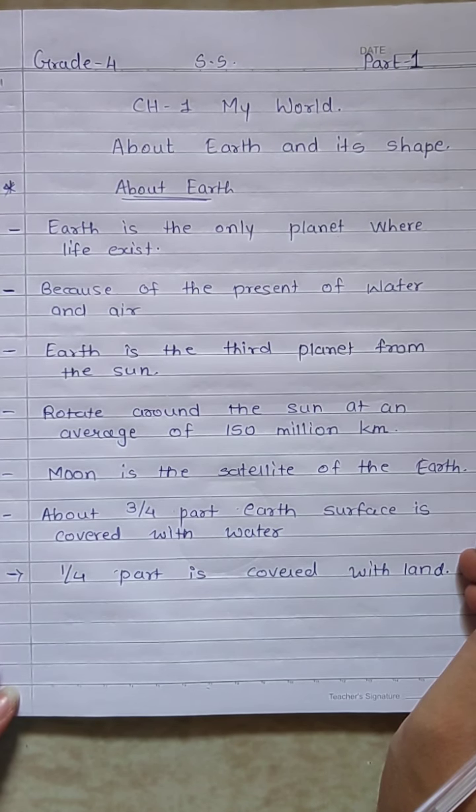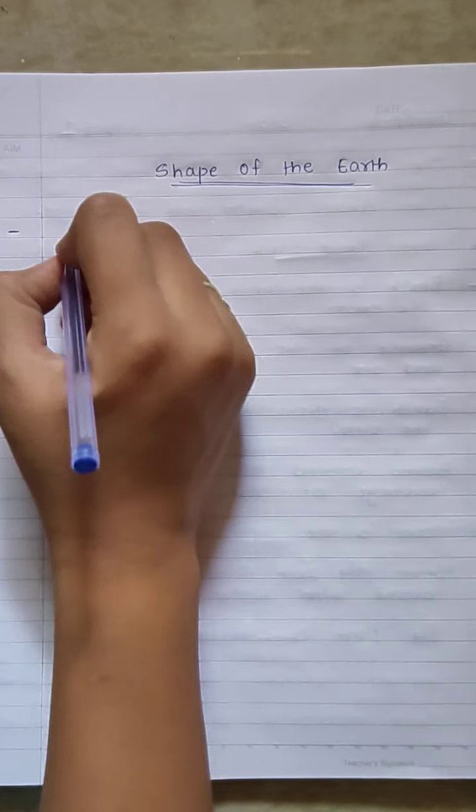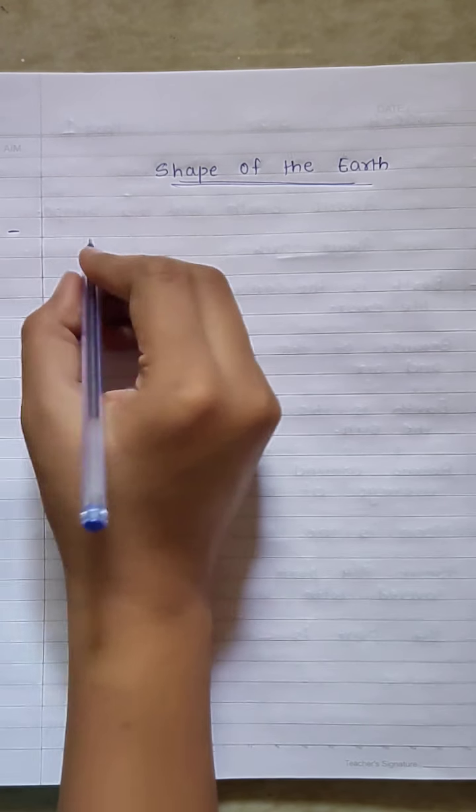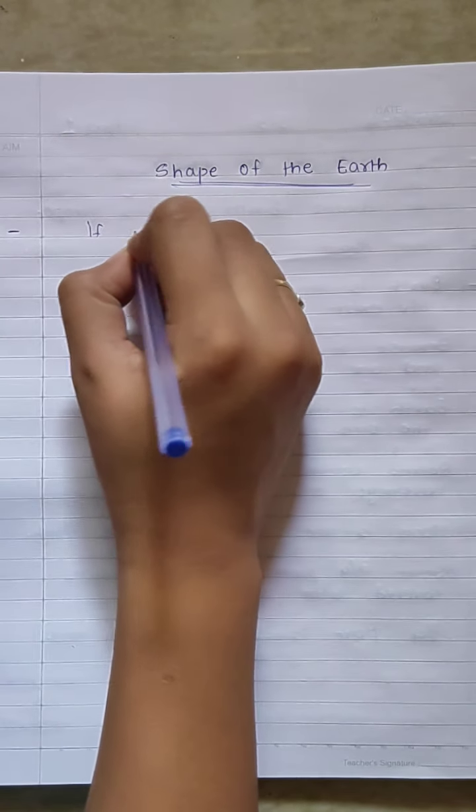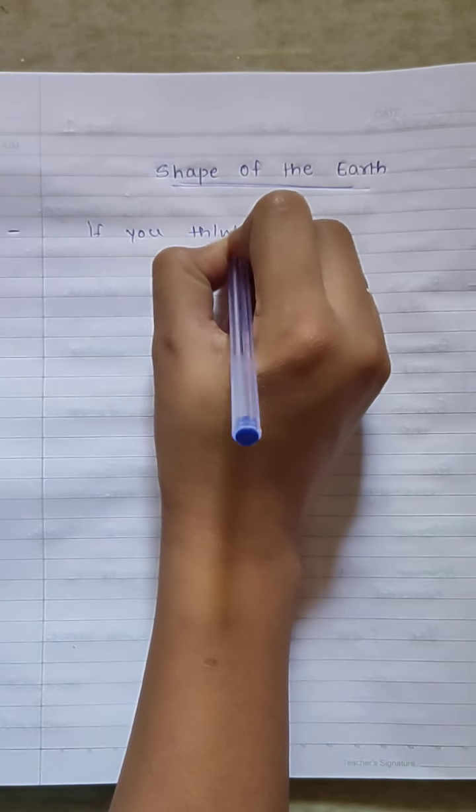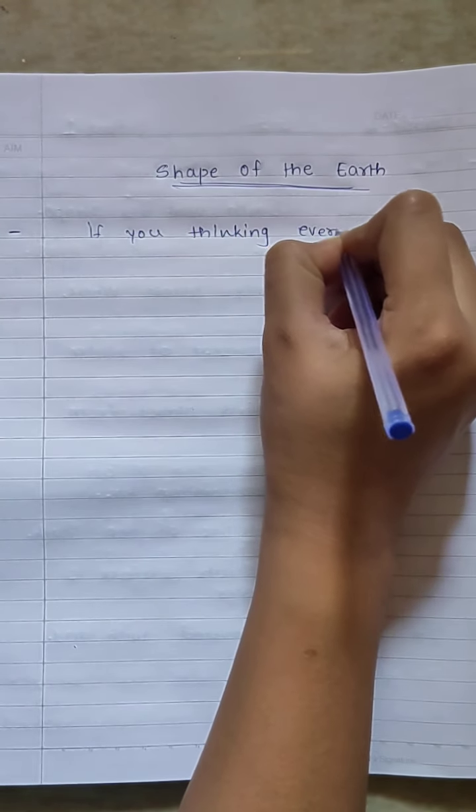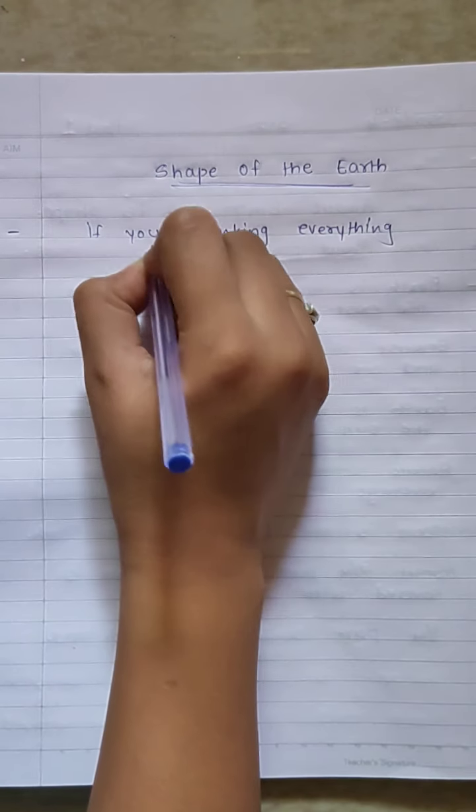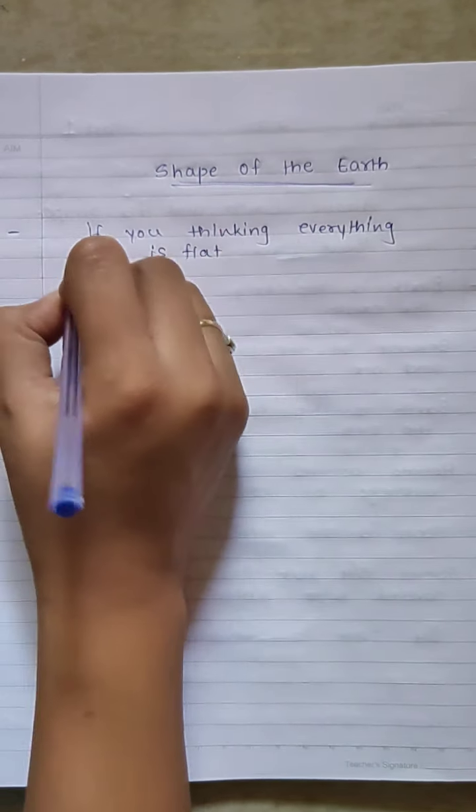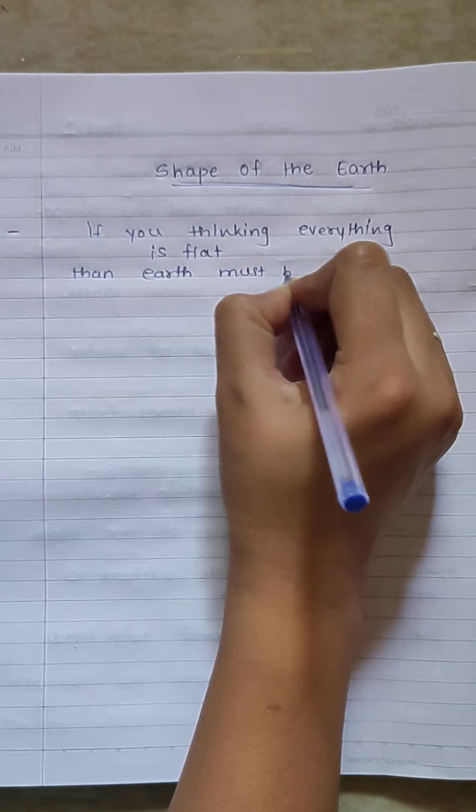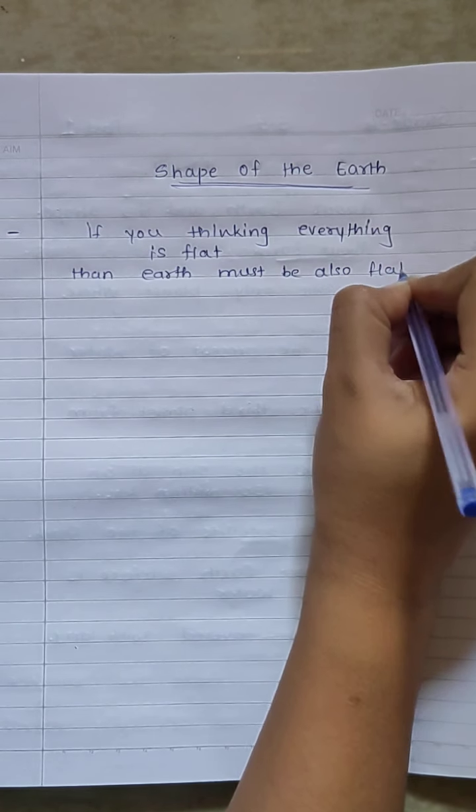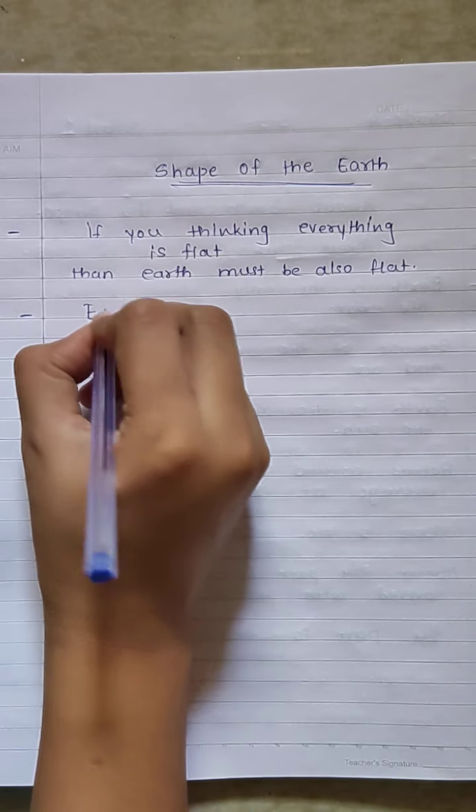Now let us discuss about the shape of the earth. You may find everything around you flat. You must be thinking that everything is flat, then how earth must be round. If you think everything is flat, then earth must be also flat, but no. Earth is round.